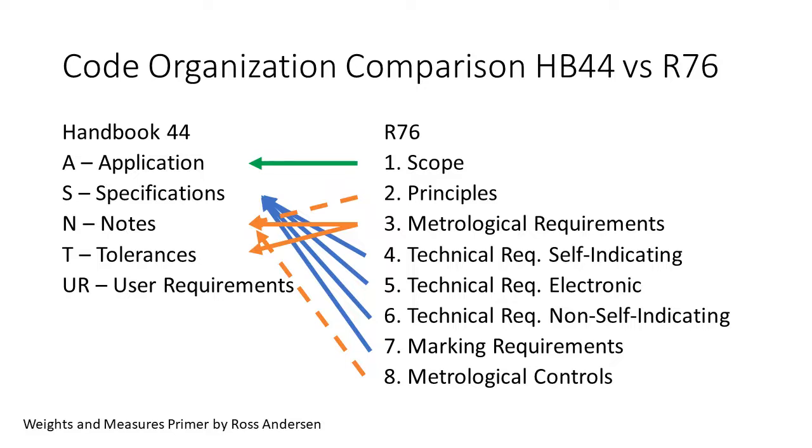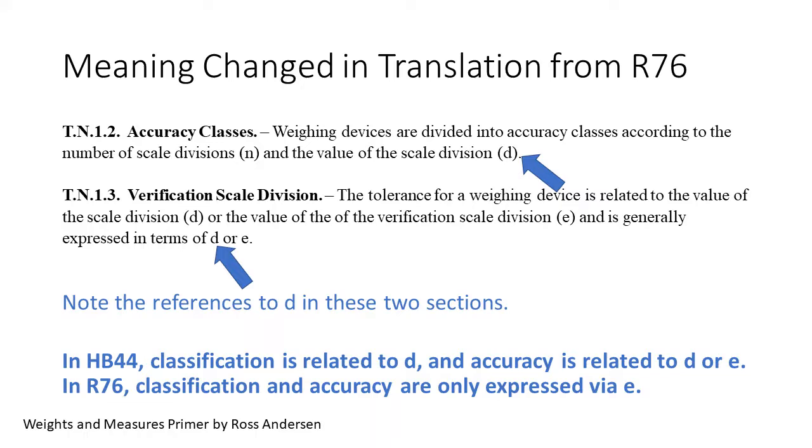R-76 has a different organization. Here's a comparison. You can see the complexity in translation, as you must ensure that the corresponding requirements end up directed appropriately to the manufacturer or the official. R-76 has no section for user requirements since it is policing the trade in instruments rather than commodities and services. Here are two fundamental examples of translation errors from the section on principles. TN1-2 deals with classification. It declares that classification of instruments is based on the number of scale divisions N and the scale divisions D. TN1-3 deals with tolerances and declares that tolerances are related to the scale division D or the verification scale division E. The problem is that the code is at odds with itself.